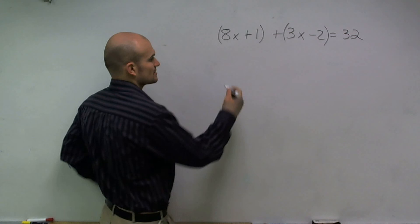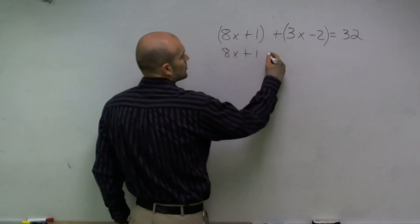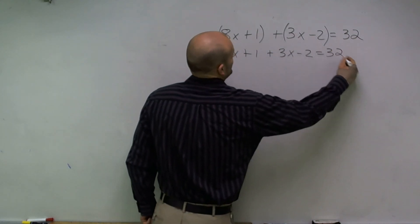So I have 8x plus 1 plus 3x minus 2 equals 32.